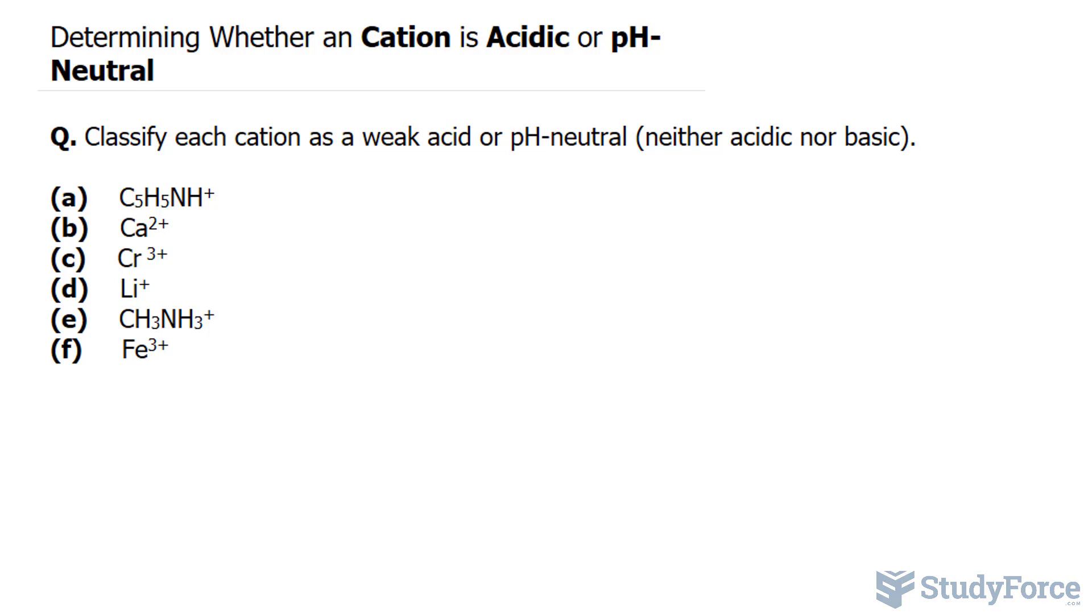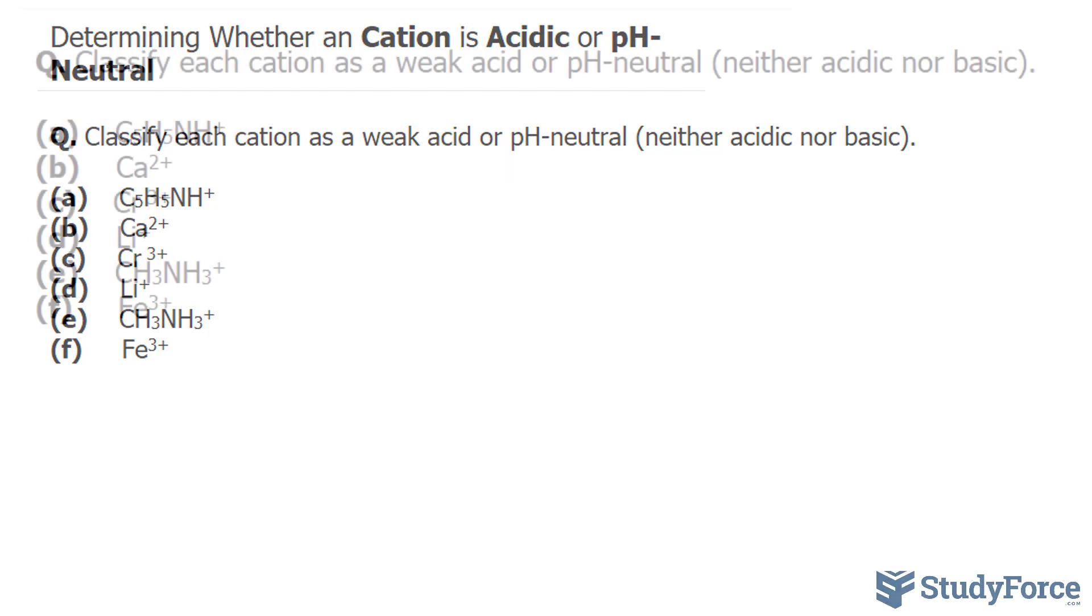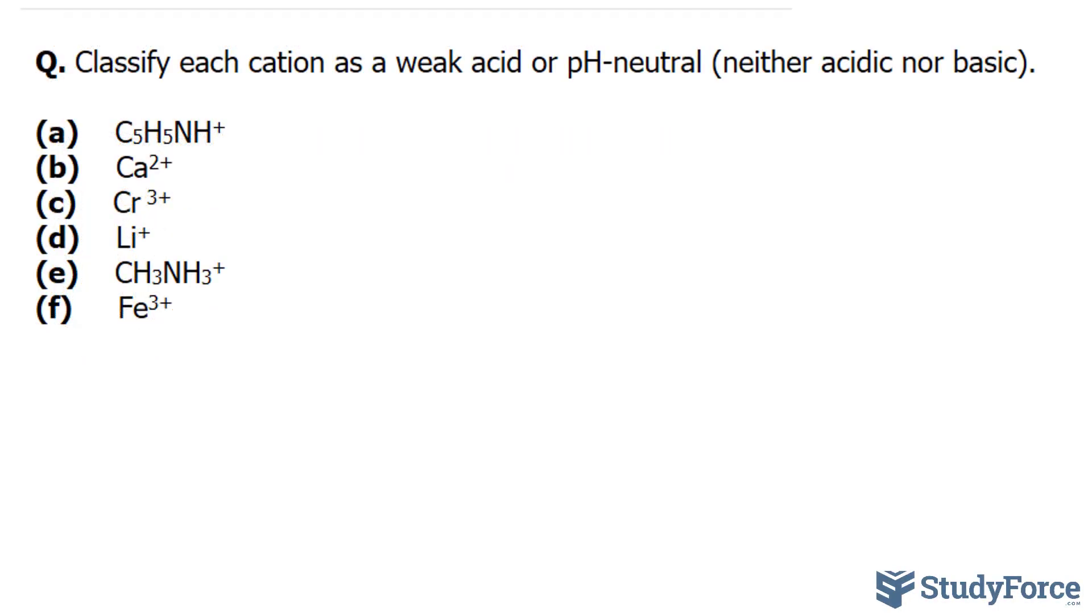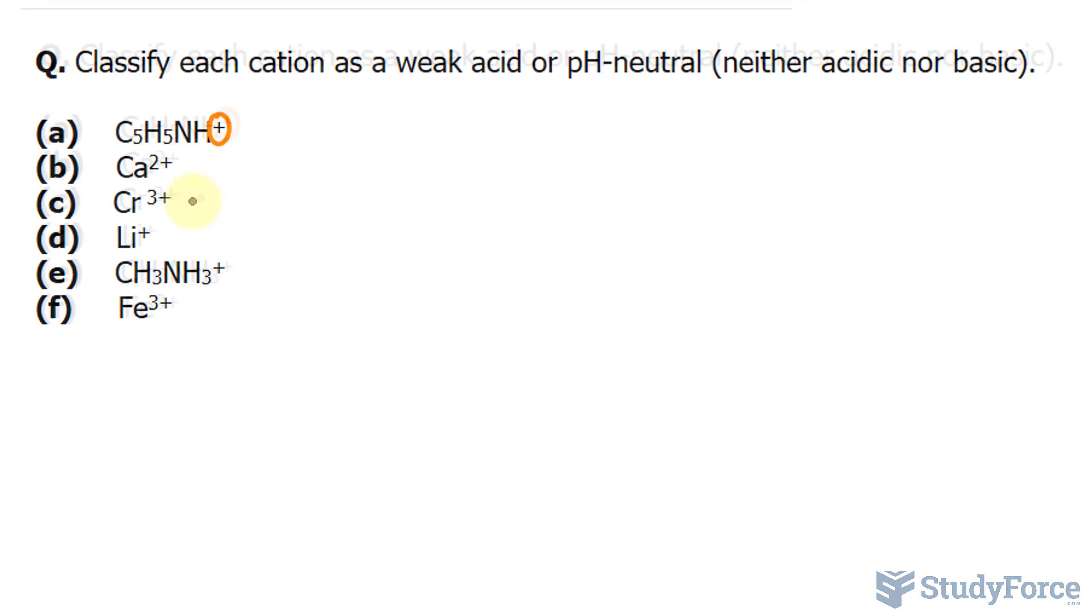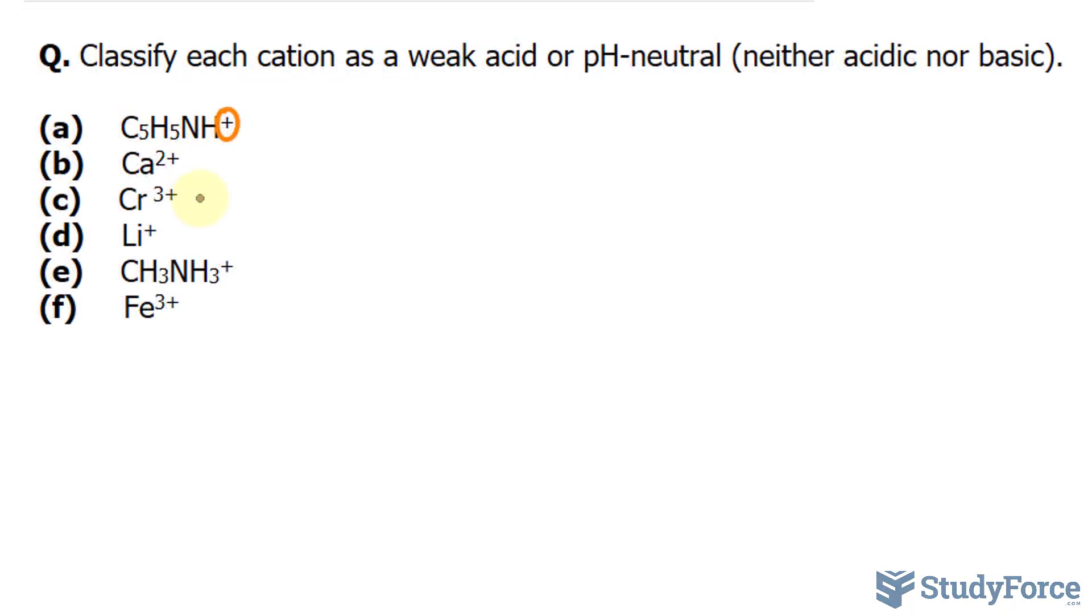So starting with A, we have C5H5NH+. Notice that this molecule has accepted a proton and this is why it's positive. Once a molecule accepts a proton, then it likely becomes a conjugate acid. Because remember, acids like to donate hydrogen ions. In addition, the ion here likely wasn't coupled with hydroxide. So we can say that this is a weak acid. Hypothetically, had it been coupled with hydroxide, it would have been a strong base and would have completely dissociated.